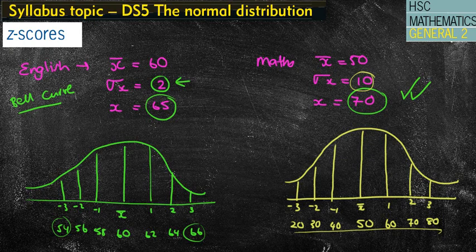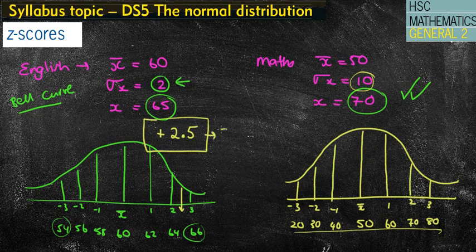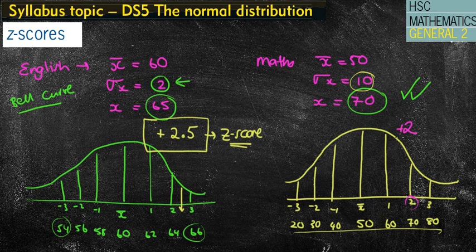Now let's look at my English mark of 65, which would be just halfway between 64 and 66 on the English bell curve. So in this case, it would be 2.5 standard deviations above the mean. That actually refers to its Z-score — that's what the Z-score is. The Z-score tells us how far above the mean we are in terms of standard deviations. Looking at the maths mark of 70, that sits exactly 2 standard deviations above the mean — that's the Z-score for the maths mark.